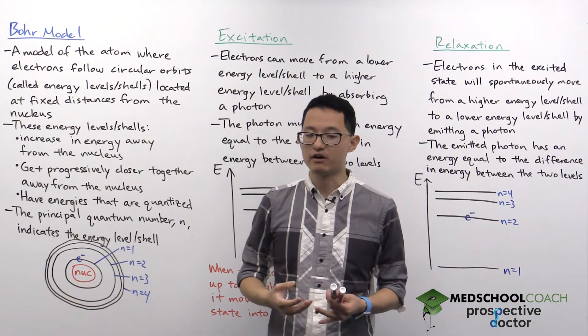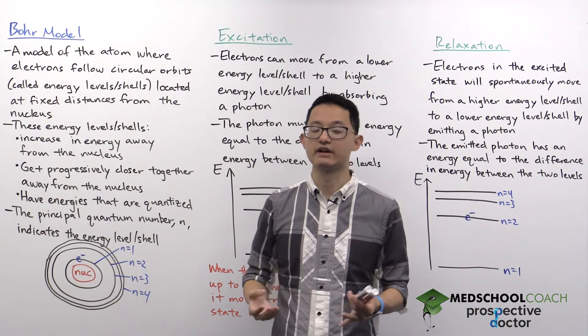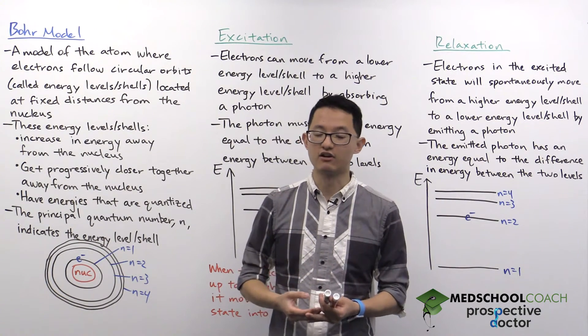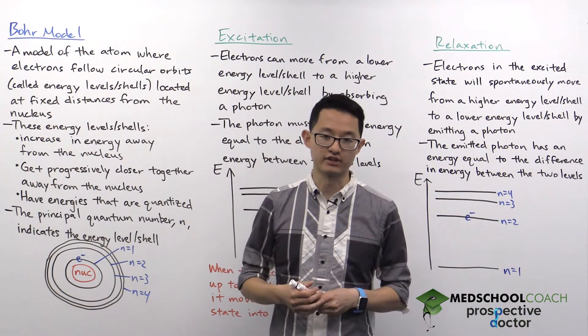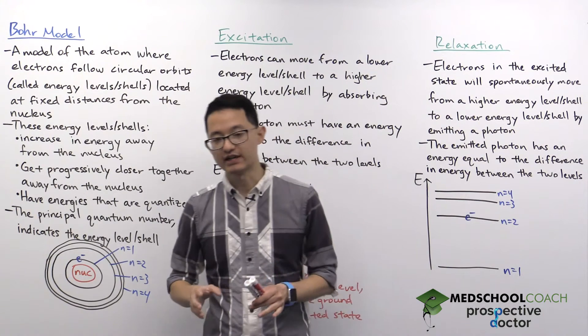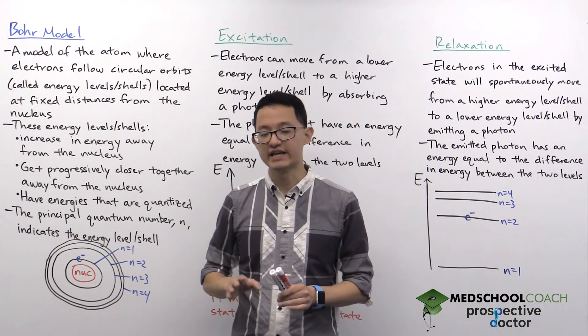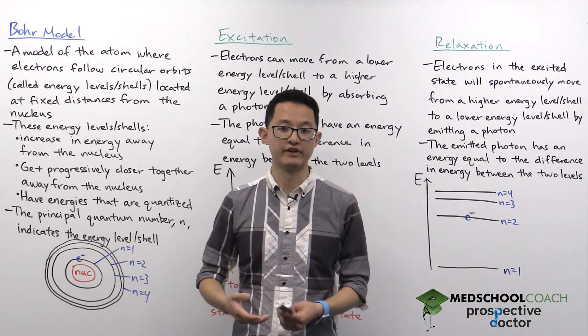Niels Bohr came up with a model that protons and neutrons are located within the nucleus that are at the center of the atom, and around the nucleus are electrons that are following circular orbits around the nucleus. As we're going to discuss, the Bohr model was ultimately wrong, but there are several key aspects of the Bohr model that helped us to develop the current prevailing model.